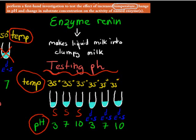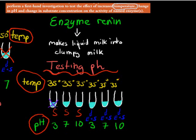Next we look at pH — how acidic something is. This time we keep temperature the same, because we're not testing for it and don't want it to change our results. The setup is the same: three test tubes with substrate only, and three with enzyme plus substrate, with pH varied. We have pH 3 (very acidic), pH 7 (neutral), and pH 10 (basic). With substrate only, we expect nothing to happen because we need an enzyme present.